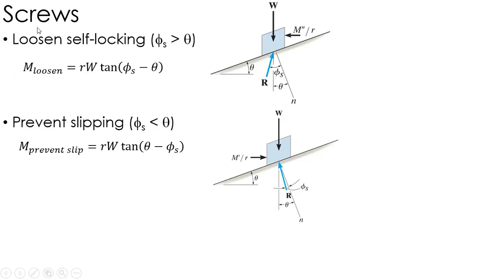Most often, what we're looking at are these self-locking screws, because we're talking about clamps. I mean, if a screw lets go of itself, it's not really doing its job. So we're looking at how much is it going to take to loosen it to overcome the friction and move it back down the ramp.